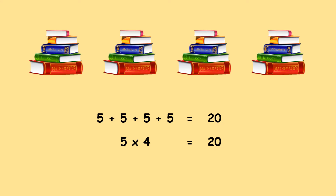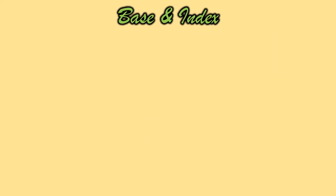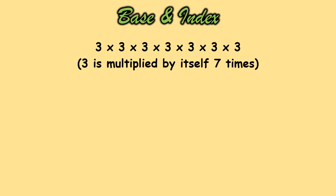In a similar manner, when you have multiplication of a number by itself, you can express it in a shorter term using indices. Indices is made up of a base and an index. For example, 3 is multiplied by itself 7 times. Instead of writing 3 into 3 into 3, seven times, I can in short write it as 3 raised to 7. Here, 3 is my base and 7 is my index.